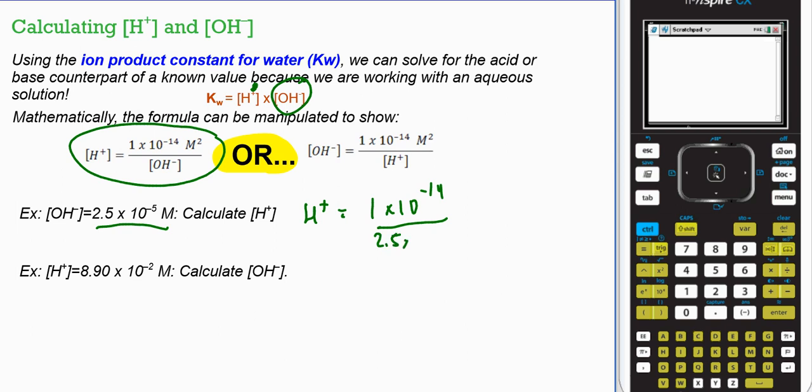Divided by the given value of hydroxide, 2.5 times 10 negative 5. So in the calculator, you would press in 1 double E negative 14, divided by 2.5 double E negative 5. So this is my operation, and my answer is 4 times 10 negative 10.